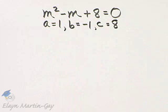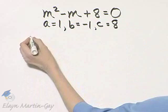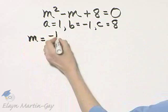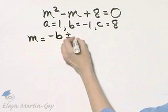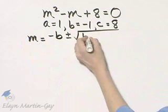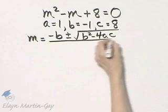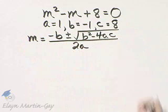And then remember your quadratic formula. Here, we're solving for m, so m is equal to negative b plus or minus the square root of b squared minus 4ac, and that is all over 2a.